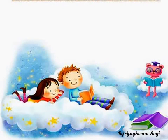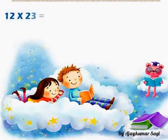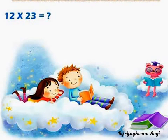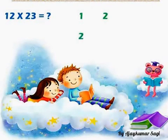Now let us see another example for the criss-cross method. We have to find out the solution for 12 into 23. Place 12 as 1 and 2, and 23 as 2 and 3.